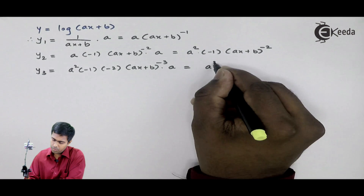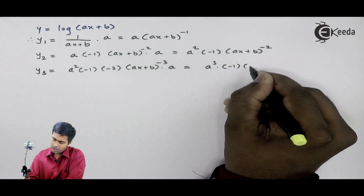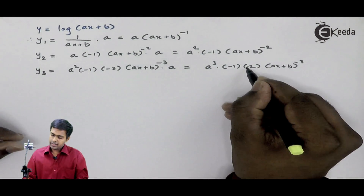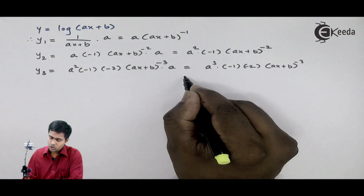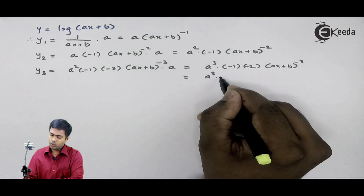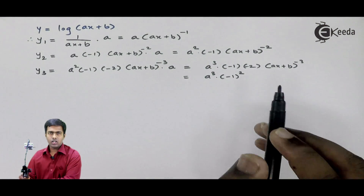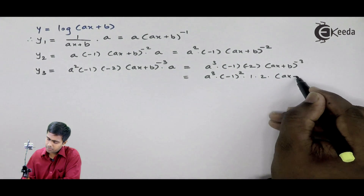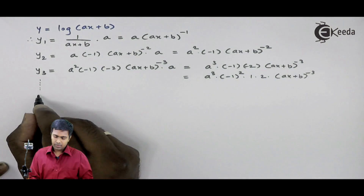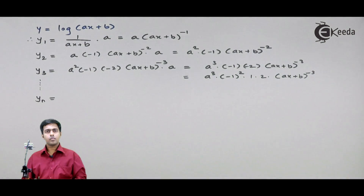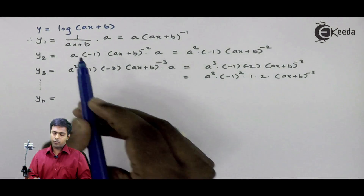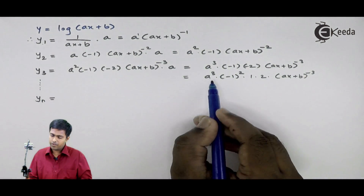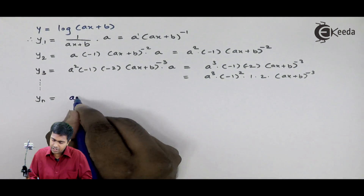So y3 will become a cubed into minus 1 times minus 2 into (ax plus b) raised to minus 3. Rewriting this in a standard format, this will become a cubed into (minus 1) squared, because here we are getting a minus sign 2 times, into 1 into 2 into (ax plus b) raised to minus 3. Now let us predict the value of yn. If you observe, in y1 we were having a raised to 1, in y2 we were having a squared, in y3 we were having a cubed. So hence in yn, we will get a raised to n.